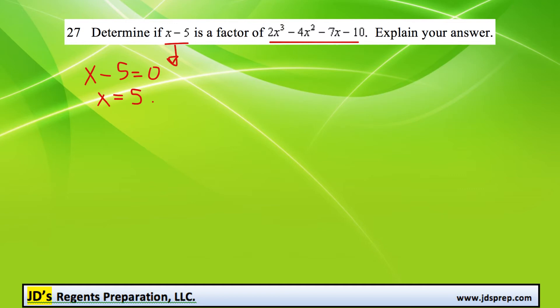In other words, we're trying to see if this is actually an x-intercept. So let's try it out. 2 multiplied by 5 cubed minus 4 times 5 squared minus 7 times 5 minus 10.